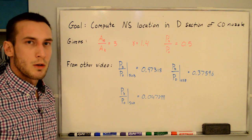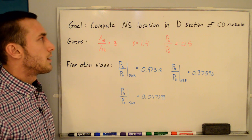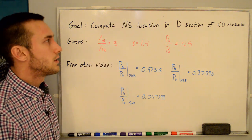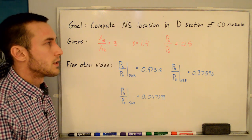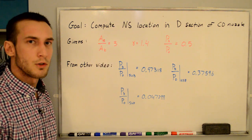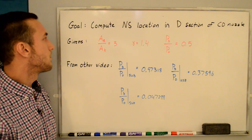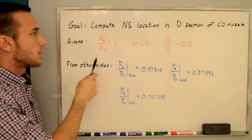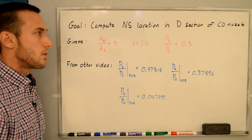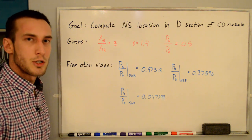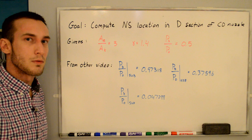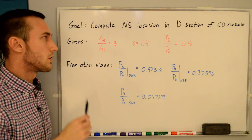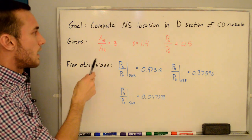Hey everyone. In this video we're going to be going through an example of how to compute the normal shock location in the diverging section of a converging-diverging nozzle. We're going to be using the same givens from my other video on the pressure ratio delineations for a CD nozzle so that we can use the results from that video.